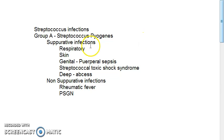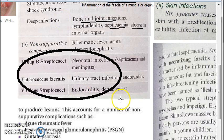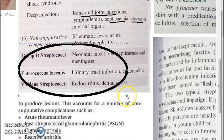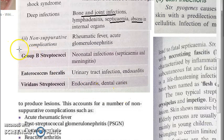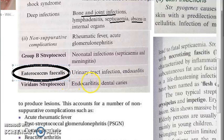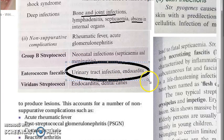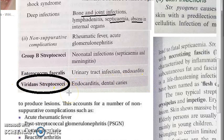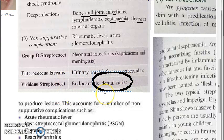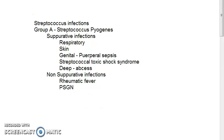Now let's move on to the other types: Group B streptococci, Enterococcus faecalis, and Viridans streptococci. Group B streptococci cause neonatal infections — specifically septicemia and meningitis. Enterococcus faecalis causes urinary tract infection and endocarditis. Viridans streptococci, which are alpha-hemolytic, cause endocarditis and dental caries. Always associate Viridans with dental caries.